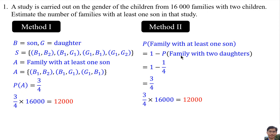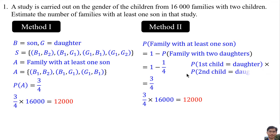The probability of a family with 2 daughters can also be calculated as the probability that the first child is a daughter multiplied by the probability that the second child is a daughter. The probability for each is 1 over 2, since there are only 2 genders. So the probability of 2 daughters is 1 over 4.